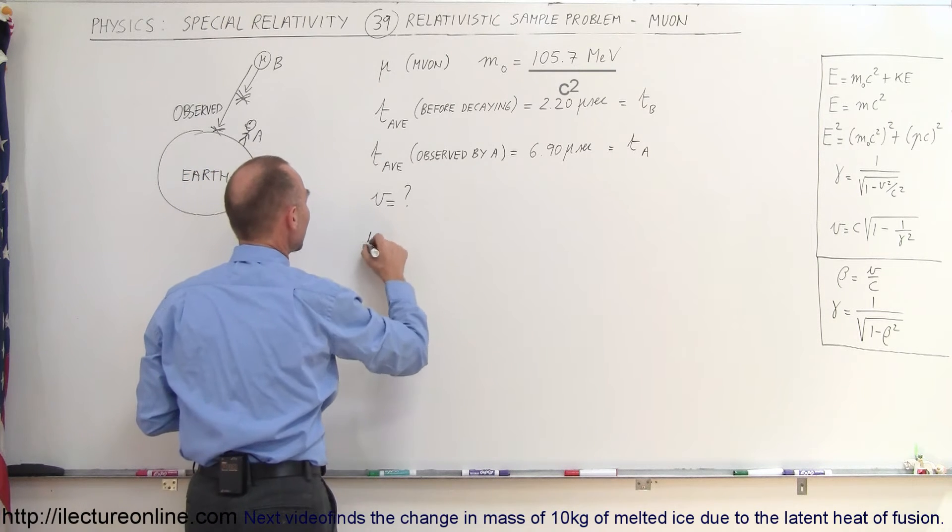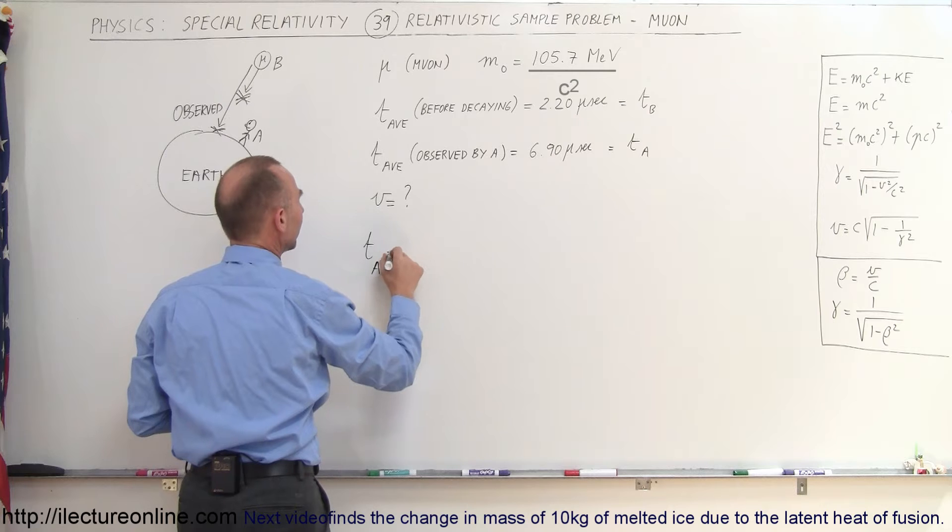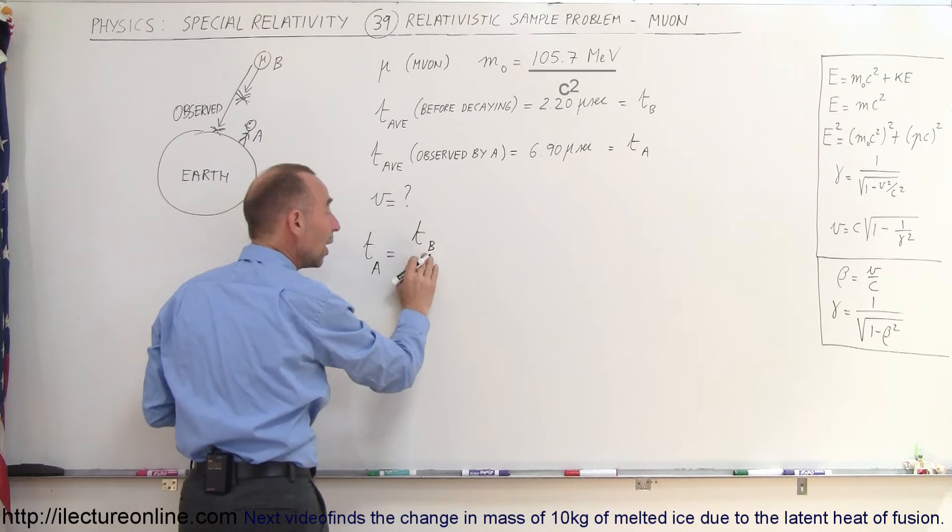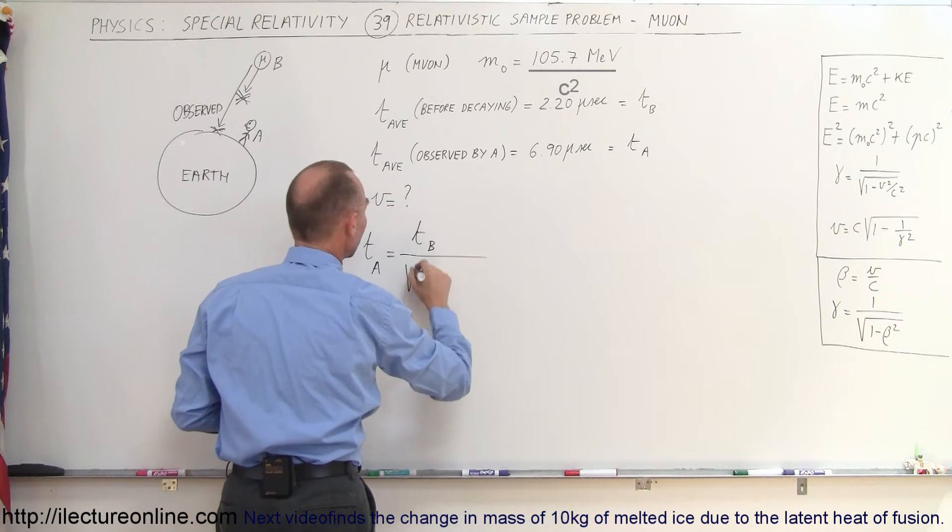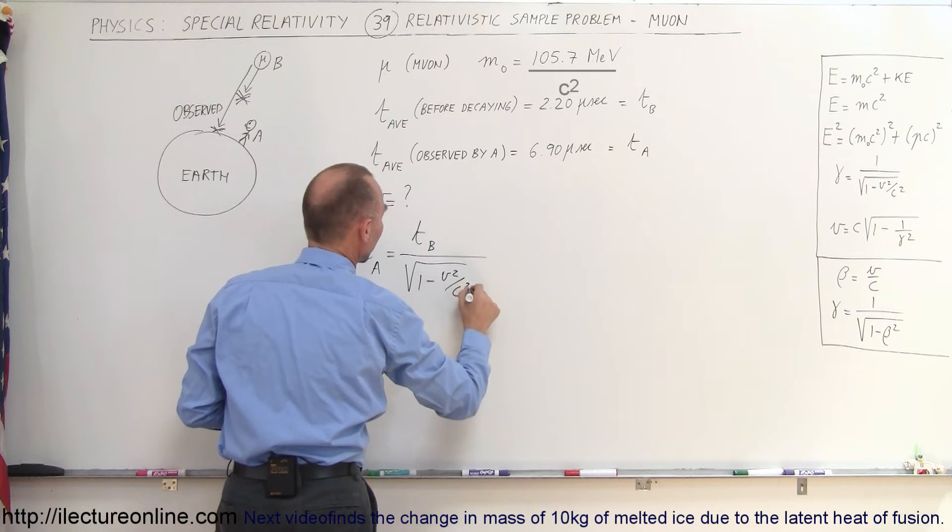So, we can say here that the time as observed by observer on the Earth is equal to the time as observed by the muon, or somebody who would be moving along with the muon, divided by the square root of 1 minus v squared over c squared.